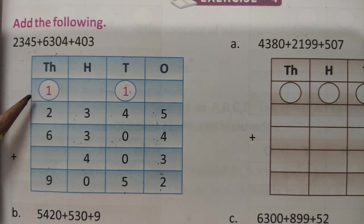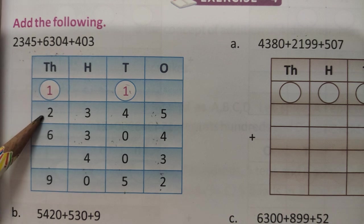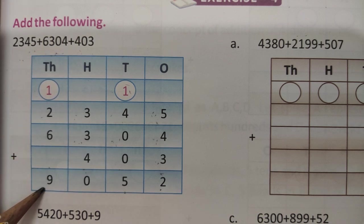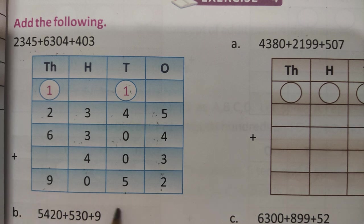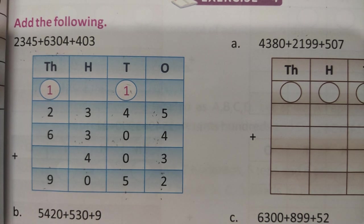So add this number: 1, 2 and 6. 1 and 2 is 3, 3 and 6 is 9. So answer is 9052. Is that clear, all of you? Any problem?